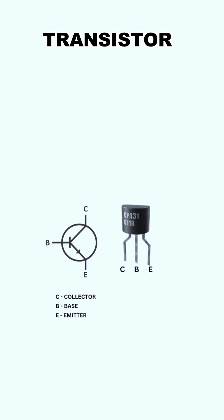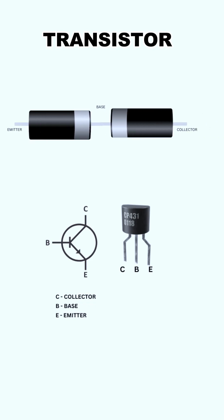A bipolar junction transistor, shortly termed as BJT, is a current-controlled device that consists of two PN junctions for its function. It is configured in two ways: NPN and PNP.